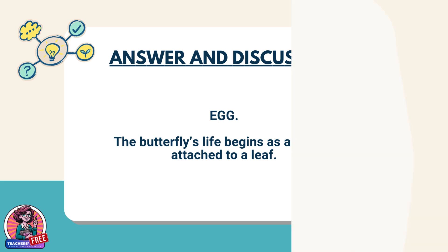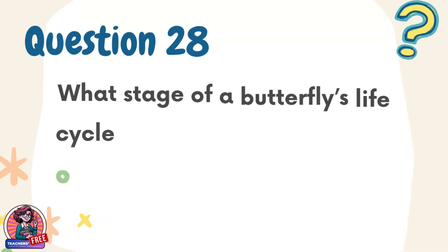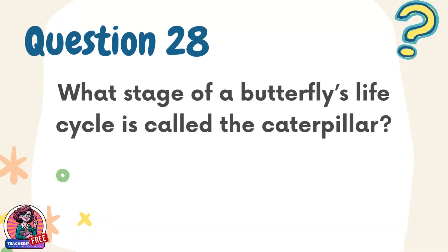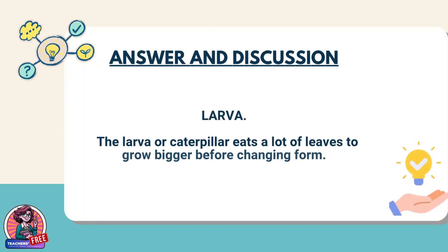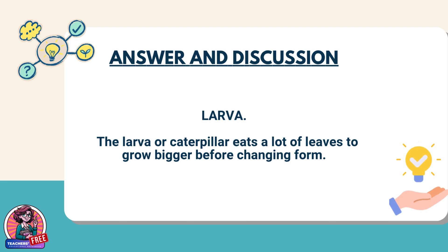Question 28. What stage of a butterfly's life cycle is called the caterpillar? Answer: Larva. The larva or caterpillar eats a lot of leaves to grow bigger before changing form.